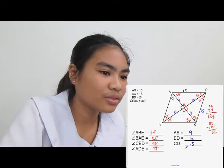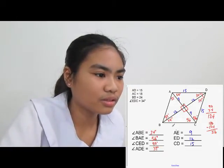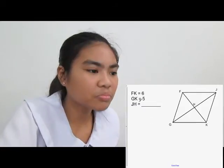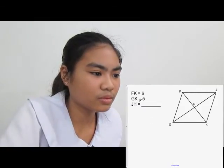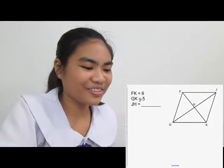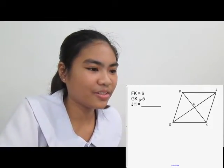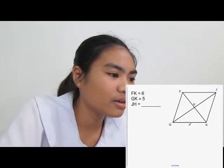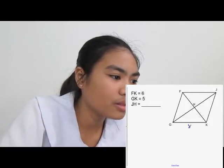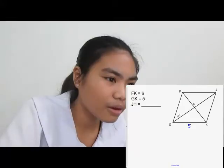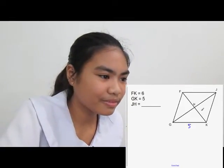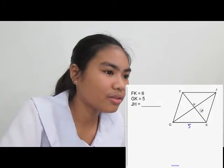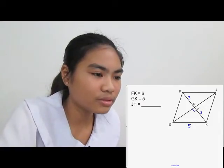Let's look at one more problem. FK is 6 and GK is 5, and we need to figure out JH. Since FK is 6 and the diagonal is bisected, each half is 3. GK is 5, and we know the intersection is a 90-degree angle.